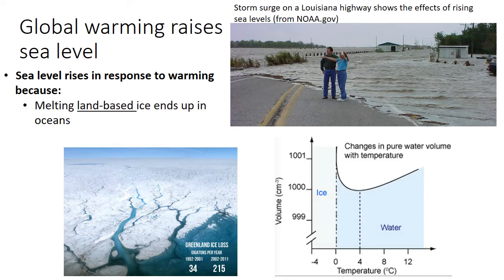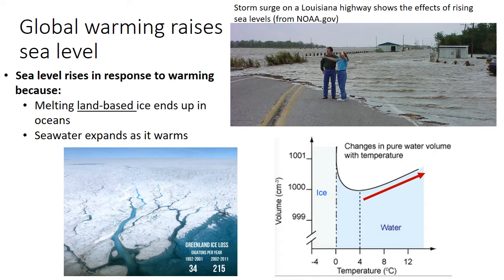The second reason we see sea level rise in response to warming has to do with thermal expansion of the ocean waters. This graph on the right shows the volume of a given amount of water and how it changes with temperature. For the most part, as water increases in temperature, it increases in volume. So as the oceans heat up, even if there's the same amount of water, it would take up more space, leading to a rise in sea level.